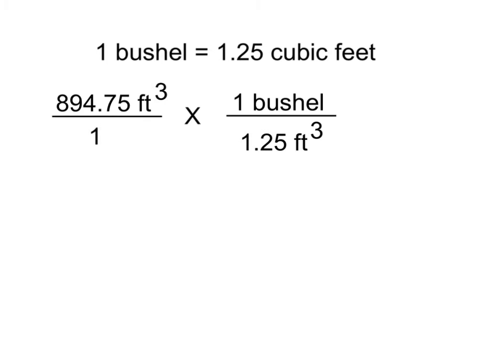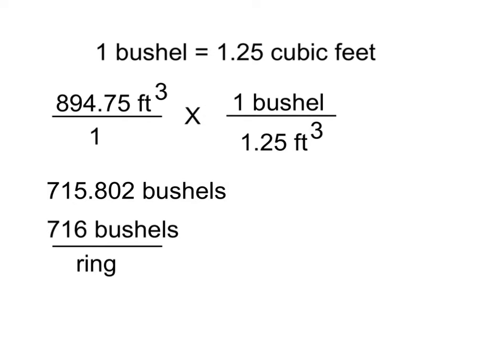Remember that the volume of our ring was 894.75 cubic feet, and we'll use our typical unit conversion method of setting up the unit conversion as a fraction and canceling out the parts that we don't want. We will set up 1 bushel over 1.25 cubic feet, and we will see then that the cubic feet will cancel here and here, leaving our answer in bushels. Taking the 894.75 and dividing by 1.25 gives us 715.802 bushels.